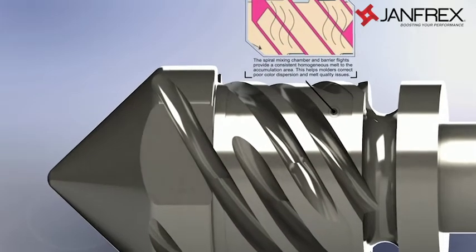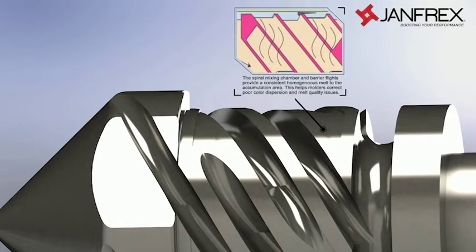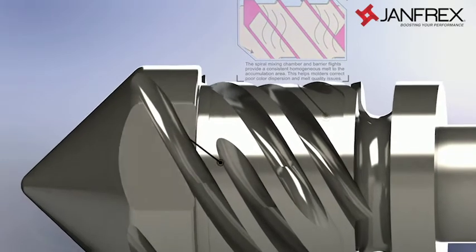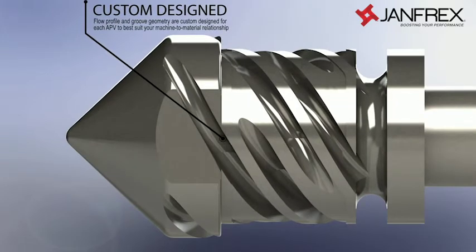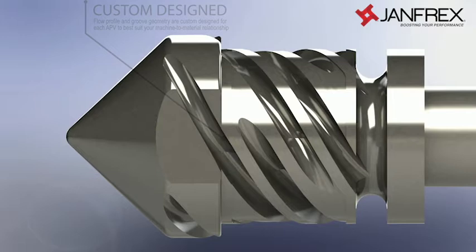The spiral mixing chamber and barrier flights provide a consistent homogeneous melt to the accumulation area. And just like our standard APV, the flow profile and groove geometry for each APV mixing valve is custom designed to best suit your process.